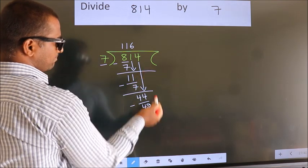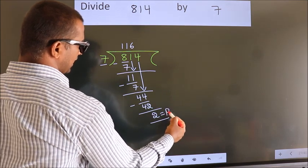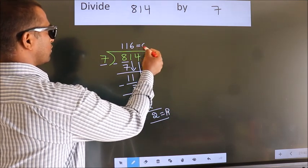No more numbers to bring down. So we stop here. This is our remainder. This is our quotient.